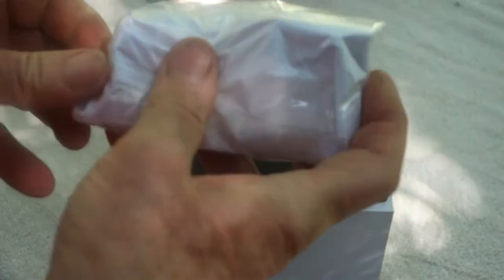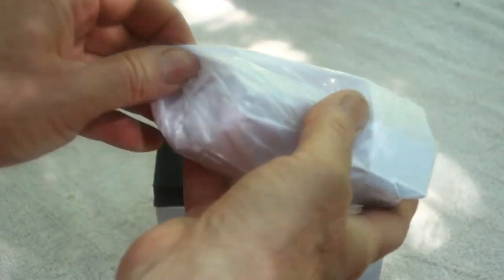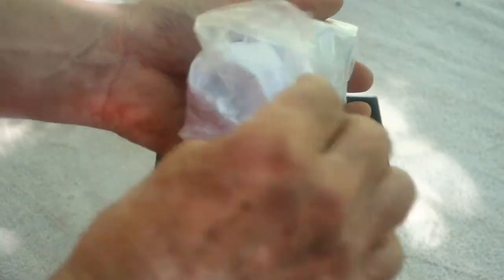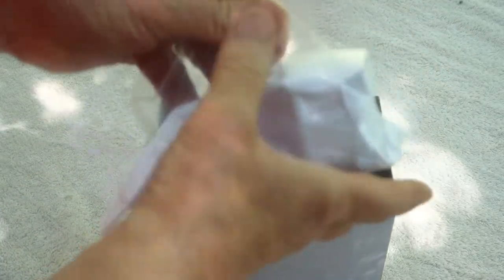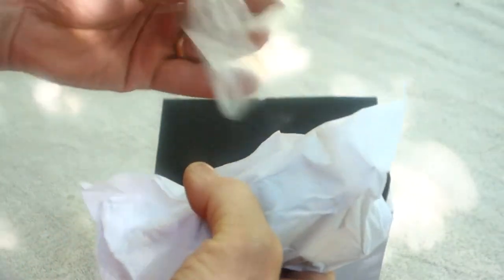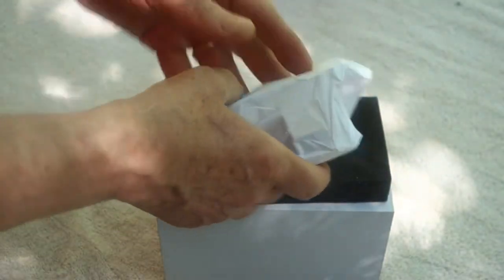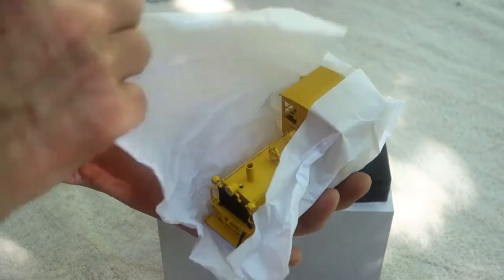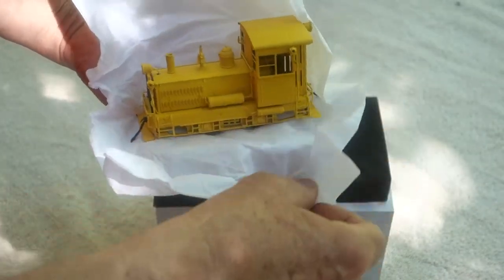So we're going to undo this baggie here, comes simply apart. And I said it was a baggie, actually it looks more like just cellophane wrap. This was probably done at the factory. There's the wrap, set that aside. We have the tissue paper.